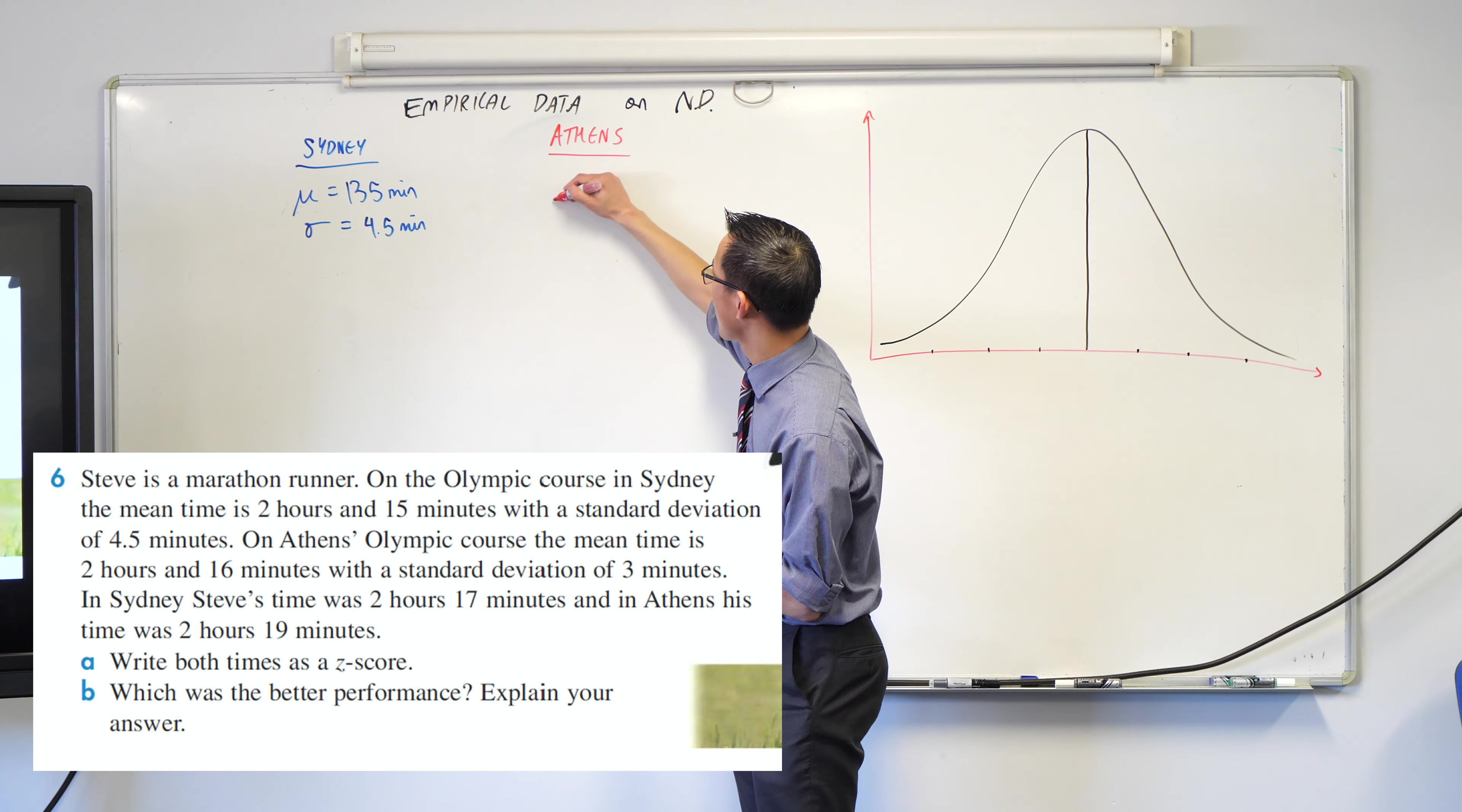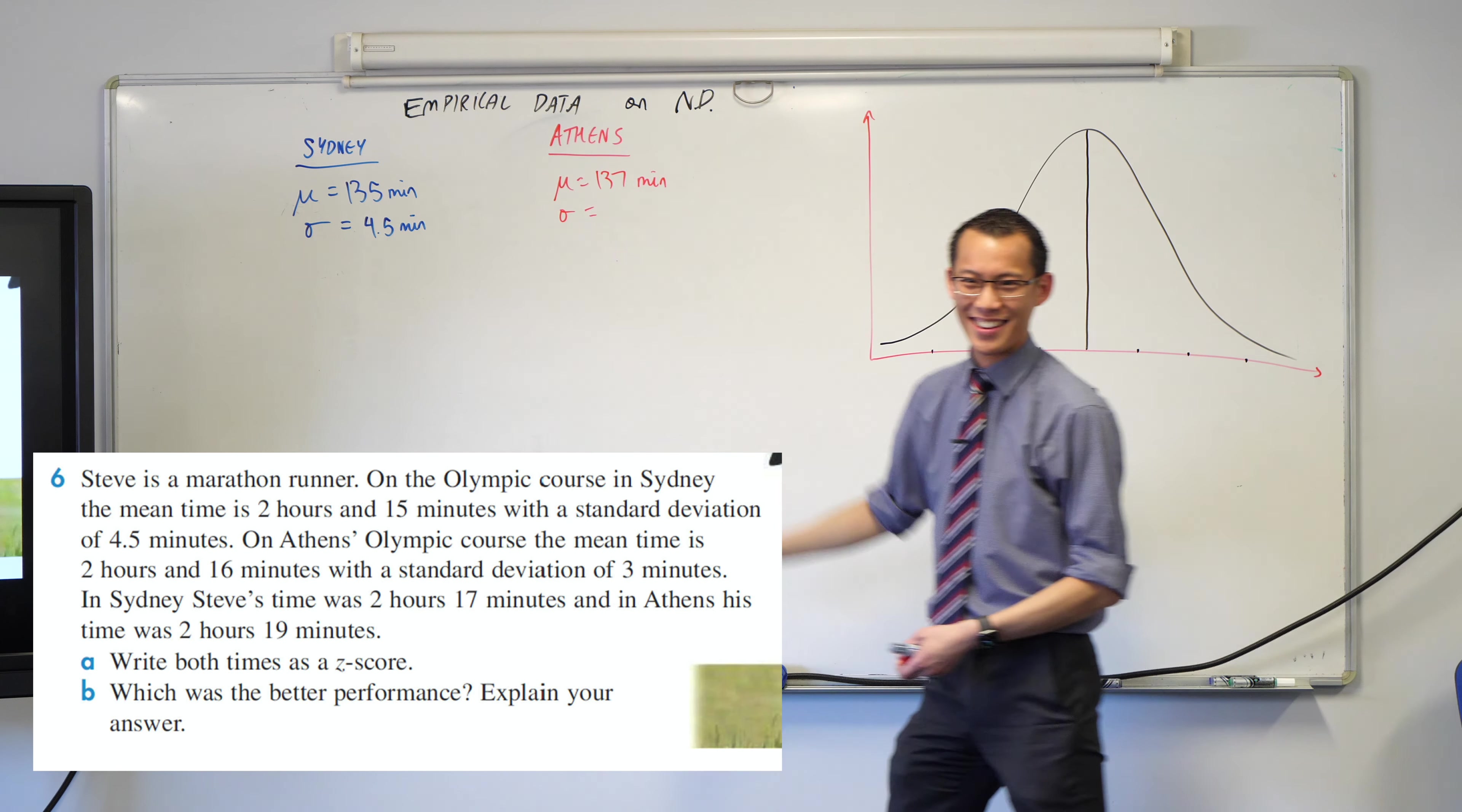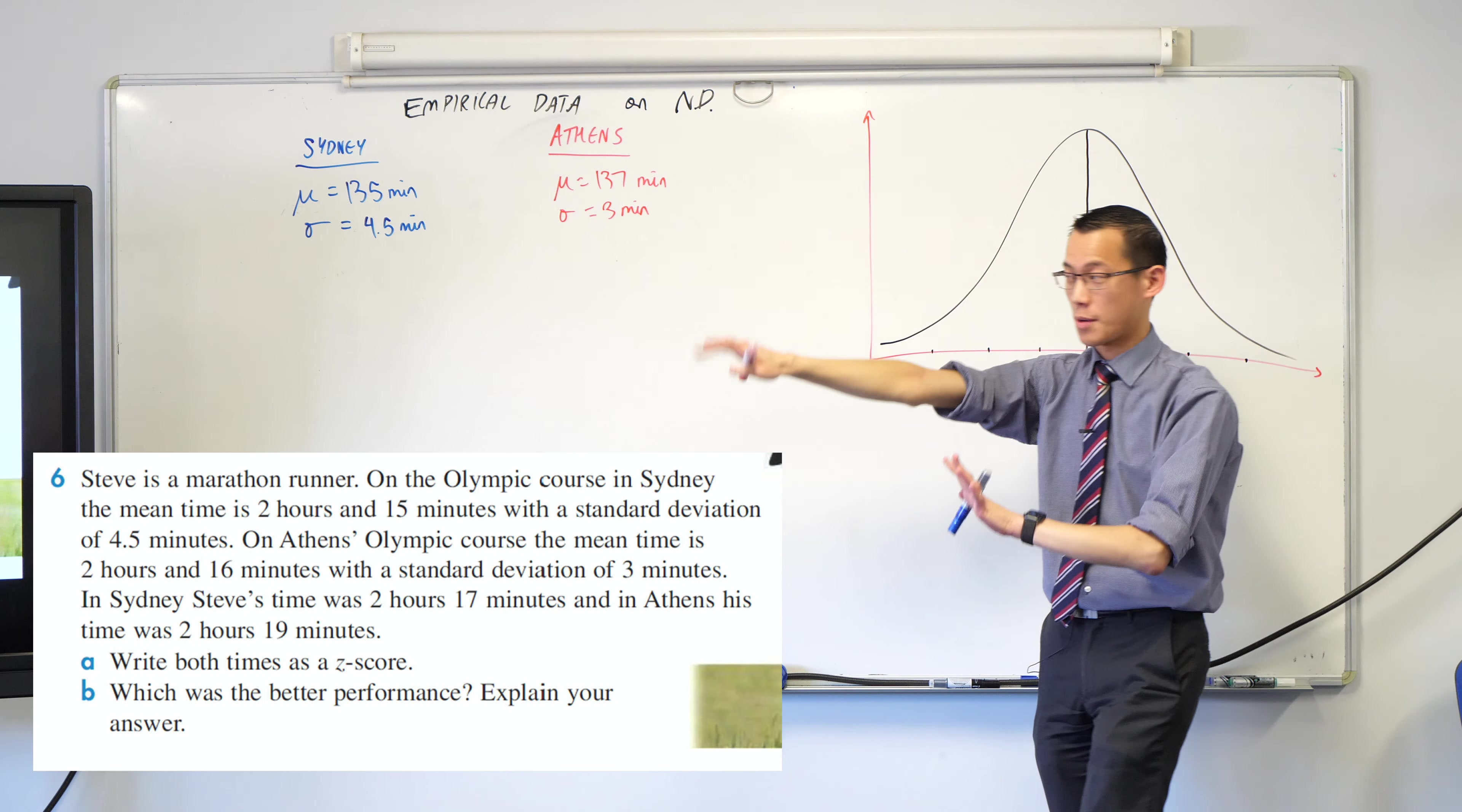Again, I get a mean. Here comes μ. It's 2 hours 17, so that's 137 minutes. That's a long marathon. The standard deviation is 3. So far so good? I haven't written anything crazy, just interpreting the question.